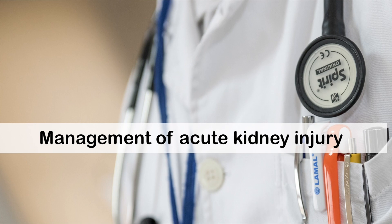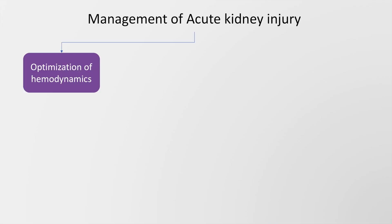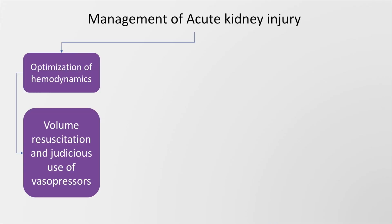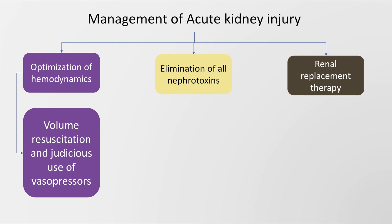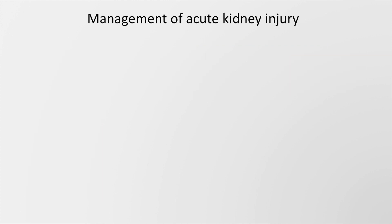The management of acute kidney injury includes optimization of hemodynamics, which includes volume resuscitation and judicious use of vasopressors. Elimination of all nephrotoxins must be undertaken, and renal replacement therapy must be initiated as advised.